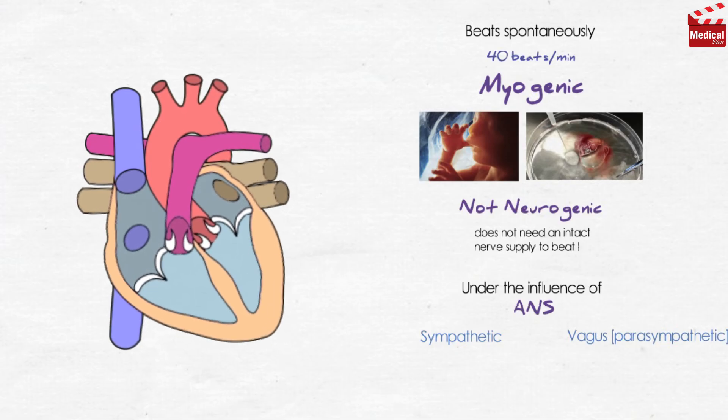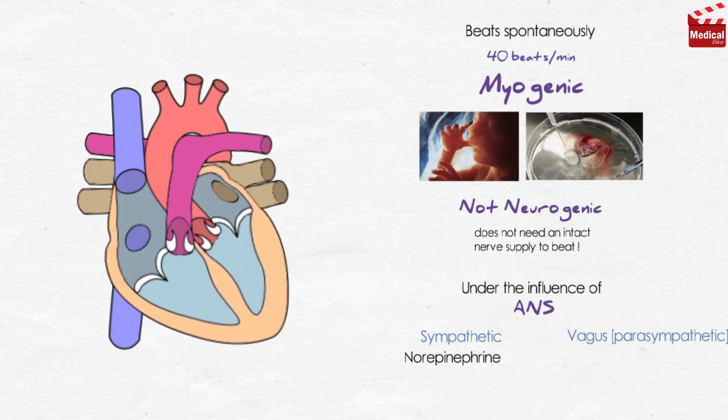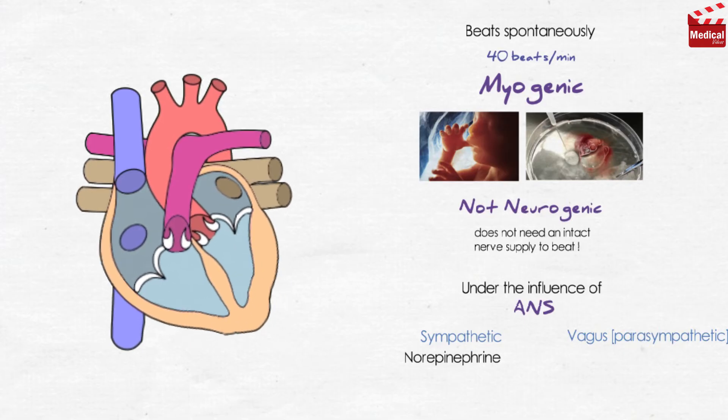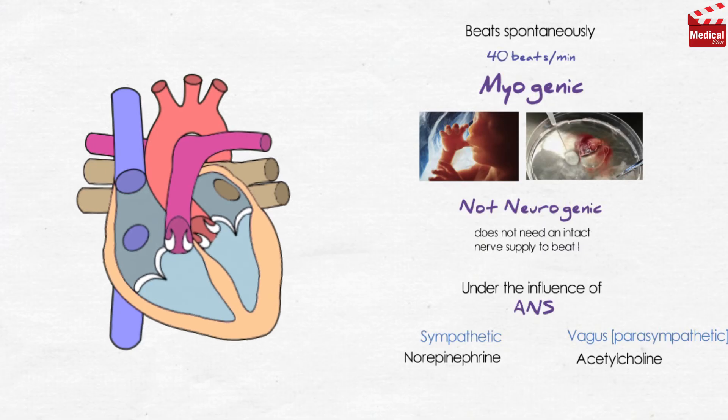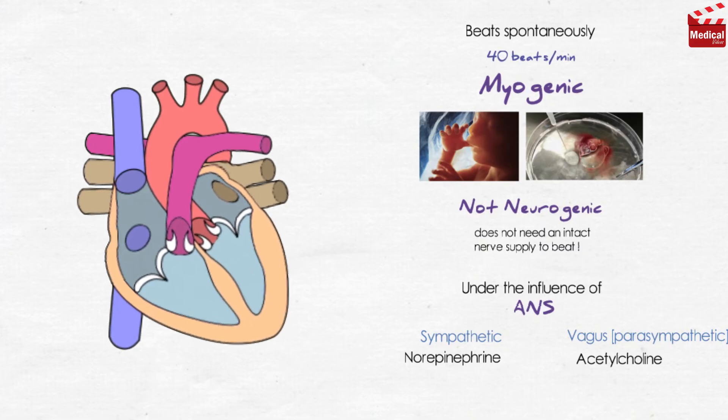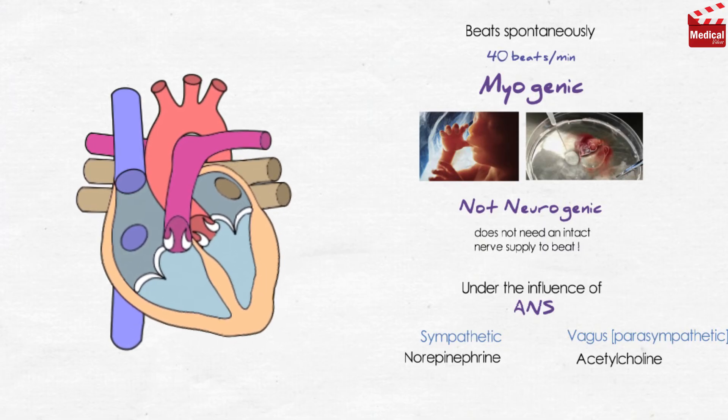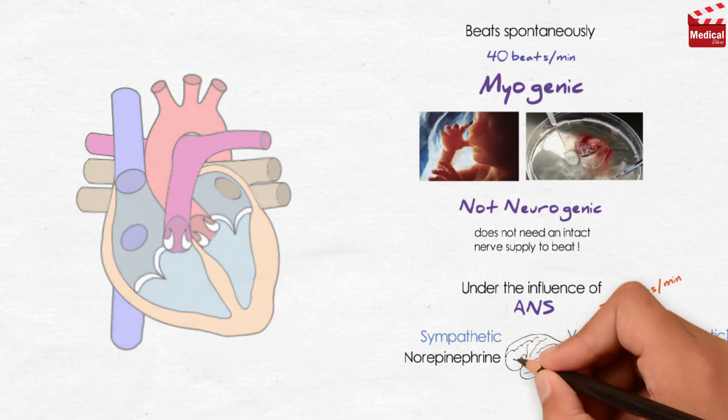The heart receives impulses from sympathetic and vagus parasympathetic nerves. Sympathetic nerve, as we know from the ANS chapter, releases norepinephrine, increasing the heart rate. And vagus nerve releases acetylcholine, decreasing the heart rate. In general, neural control of the heart speeds a pulse up to 70 beats per minute. Sympathetic and vagus nerves are under the control of higher centers in the brain.